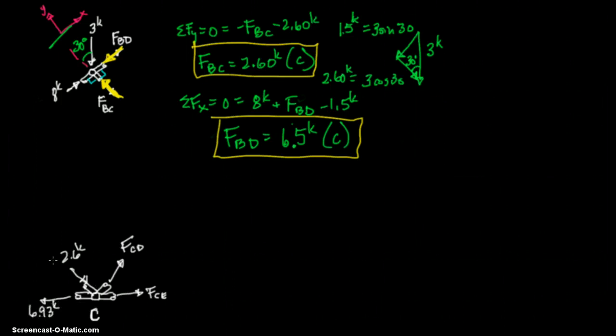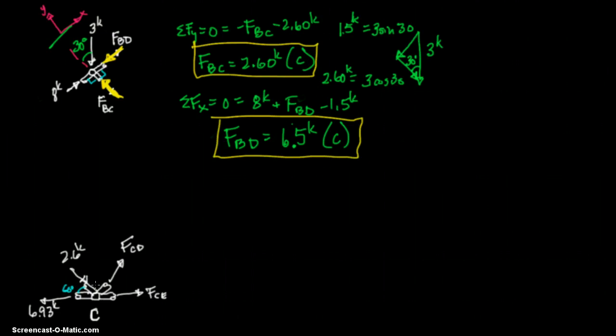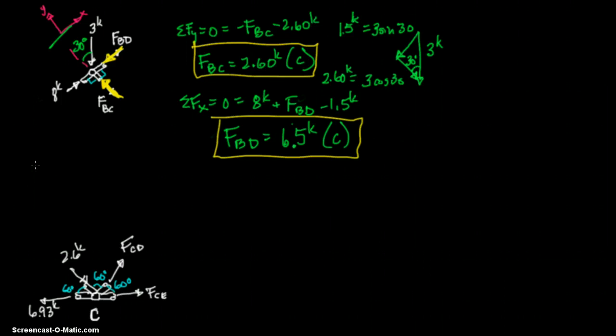Those are our knowns. We know AC and BC. AC and FBC. And let's go ahead and put our 60. These are all 60 degree angles. 60 degree angle. 60 degree angle. There we go.